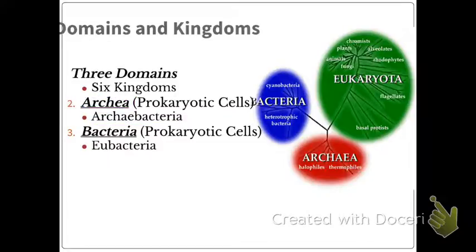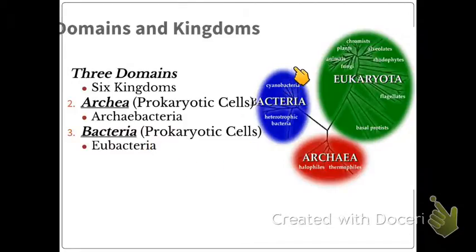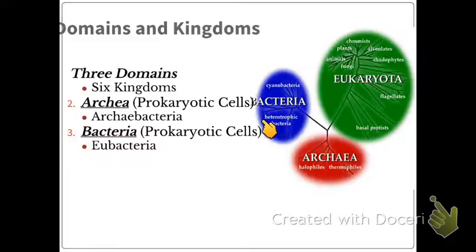Bacteria is our next domain, and it also has prokaryotic cells. The kingdom within it is eubacteria. These bacteria include cyanobacteria and our heterotrophic bacteria. Heterotroph means eating — it has to eat for energy, it doesn't make its own. So our eubacteria are generally our heterotrophic bacteria.